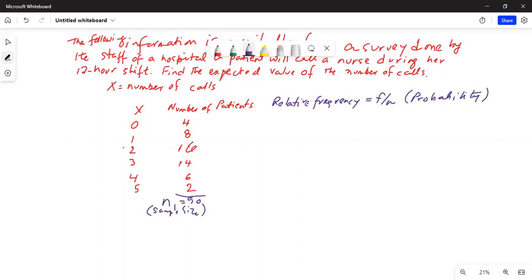So f is the frequency for each individual value of x. Number of patients can be thought of as f, and relative frequency is f divided by n. For example, relative frequency of zero number of calls is 4 over 50 which is equal to 0.08.